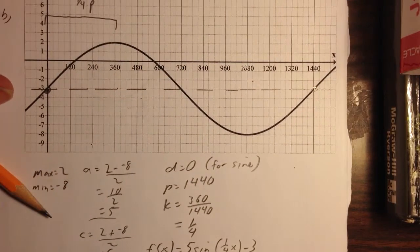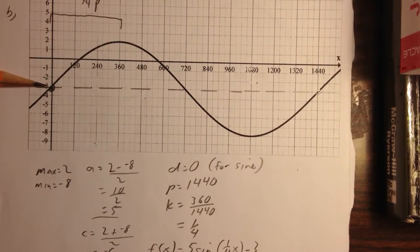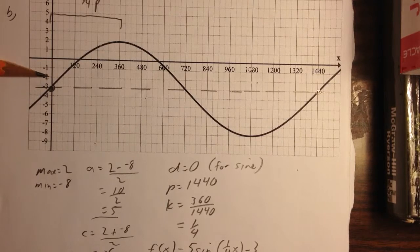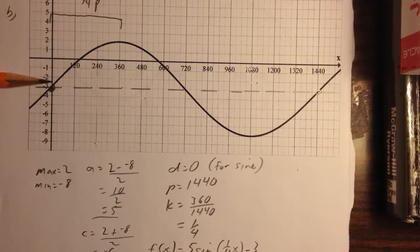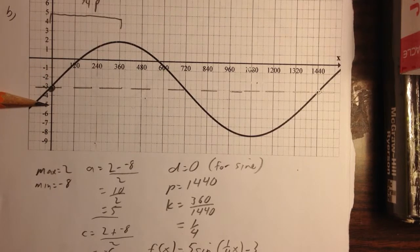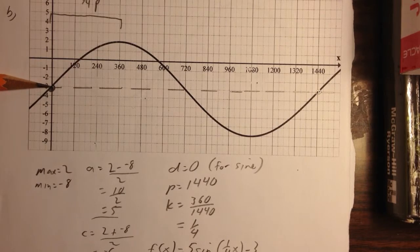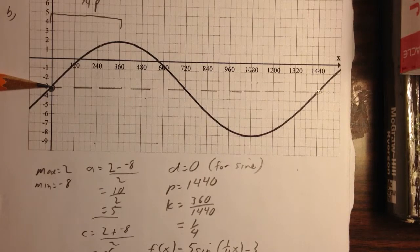So I go ahead and I draw in my axis of symmetry. From there I can see that since the curve meets the axis of symmetry right on the y axis, if I look at this from a sine perspective, I have no d value. I have a zero d value. There is no phase shift for sine.